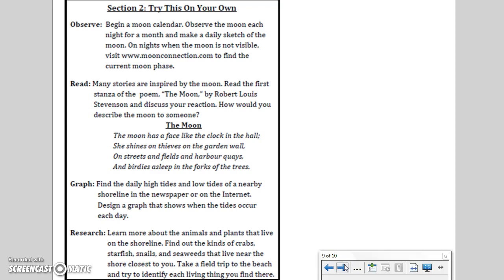Section 2: Try this on your own. These are optional activities that you could choose to do to exceed the standards. Observe: Begin a moon calendar. Observe the moon each night for a month and make a daily sketch of the moon. On nights when the moon is not visible, visit www.moonconnection.com to find the current moon phase.